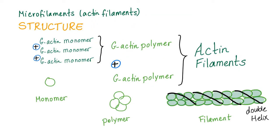The structure of actin filaments is very straightforward. We have G-actin monomers combining together to form G-actin polymer. These polymers combine together to form the famous actin filament. The actin filament is a double helix — do not forget that. Monomer into polymer into actin filament.